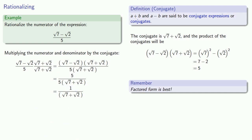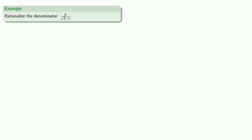One thing worth pointing out is that while we have rationalized the numerator, we haven't been able to suppress the radical expression — a version of it has appeared in the denominator. We could also try to rationalize the denominator: 8 over square root of 3 minus 1.